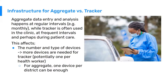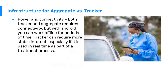This largely affects the number and type of devices used. More devices are needed for tracker — potentially one per health worker — while for aggregate, maybe one device per district can be enough. For power and connectivity, both tracker and aggregate require connectivity, but with Android you can work offline for periods of time. Tracker can also require more stable internet, especially if used in real time as part of a treatment process, meaning less tolerance for downtime.